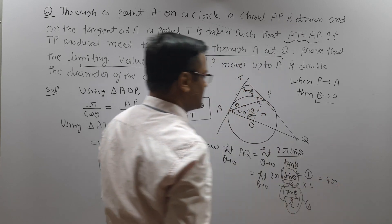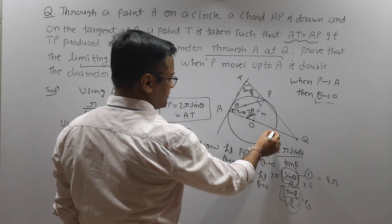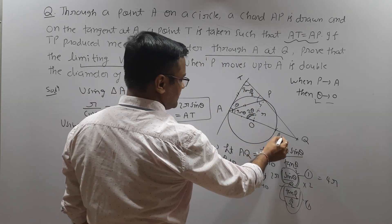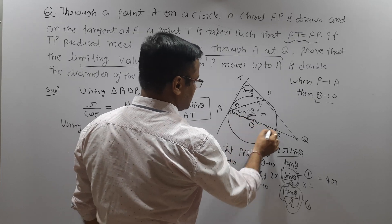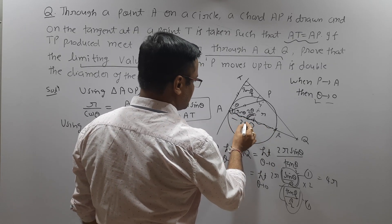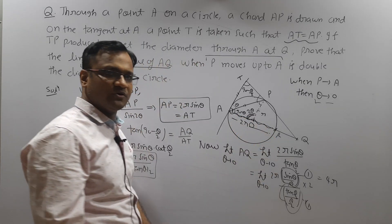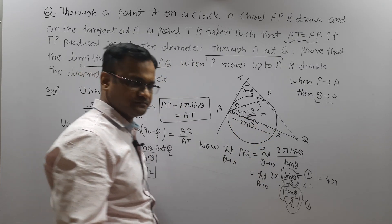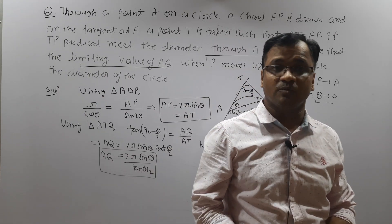This is clearly double the diameter, because if the diameter is 2R, then double the diameter is 4R. And hence proved.